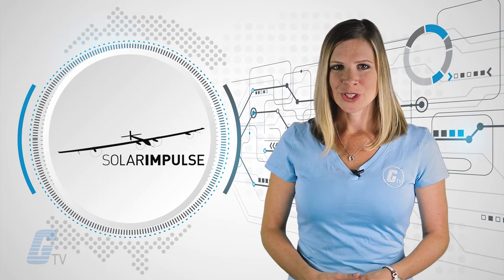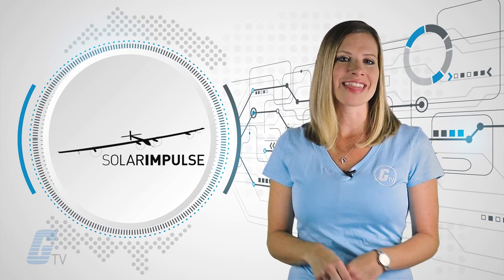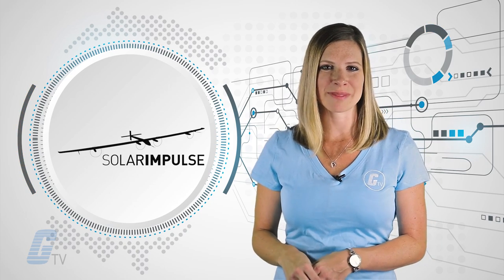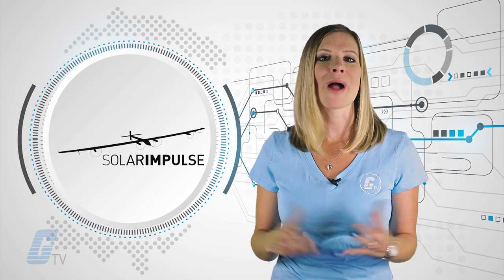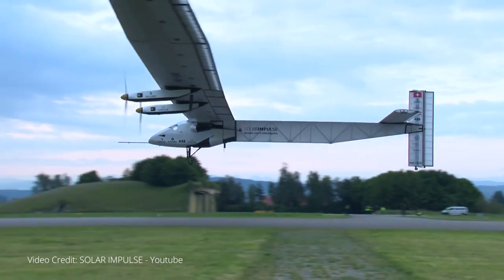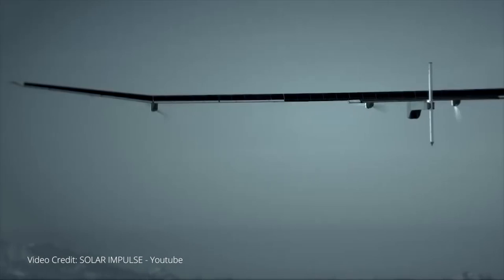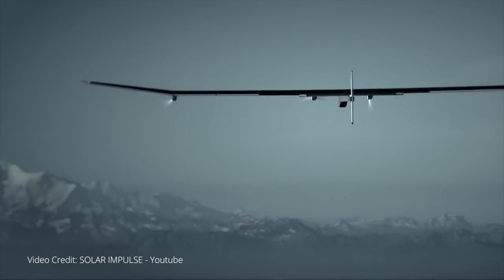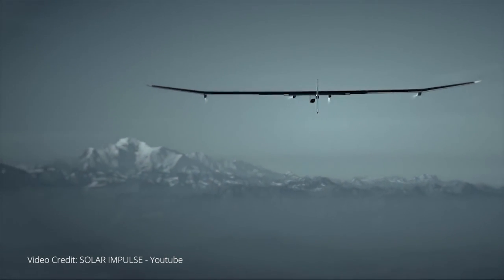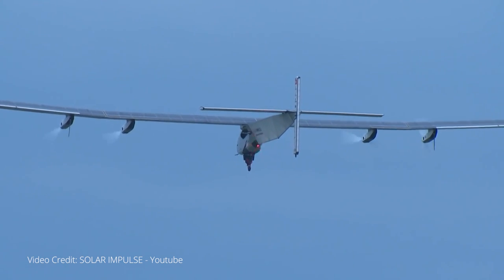The Solar Impulse 2, a completely solar-powered airplane, touched down last month in Abu Dhabi to complete its one-year trip around the globe. The plane traveled 26,000 miles, crossing four continents, three seas and two oceans, all the while setting 19 official aviation records, including the world's longest non-stop solo flight.